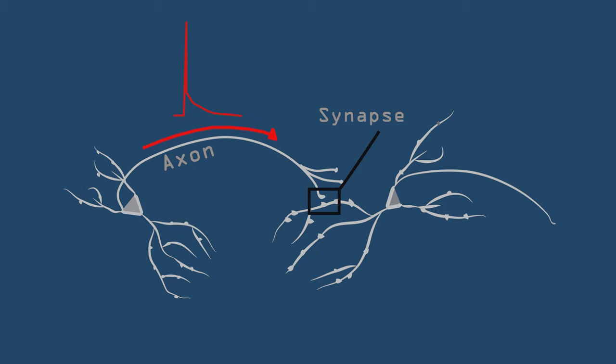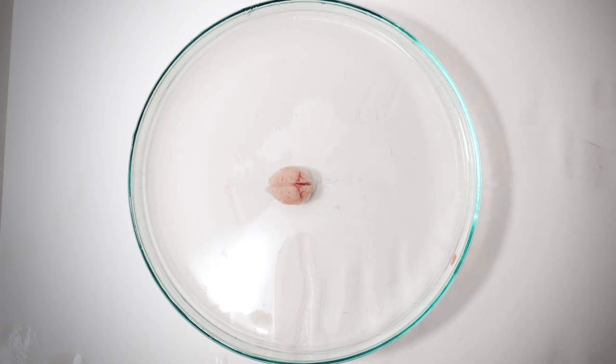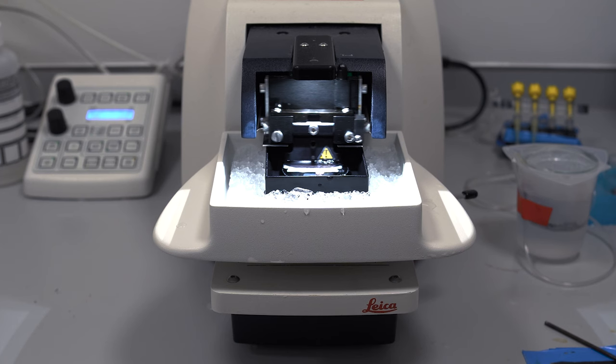Let's do an experiment where we look at changes in synaptic strength called long-term potentiation, or LTP. Here we study this in a rodent brain, but it has been observed in several different species.